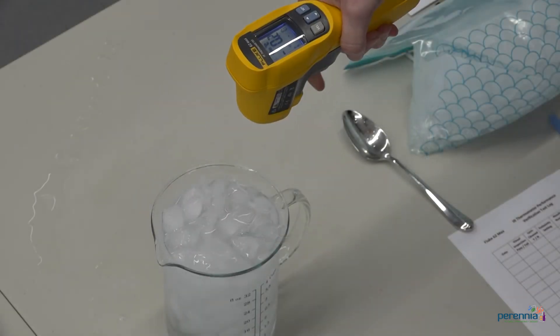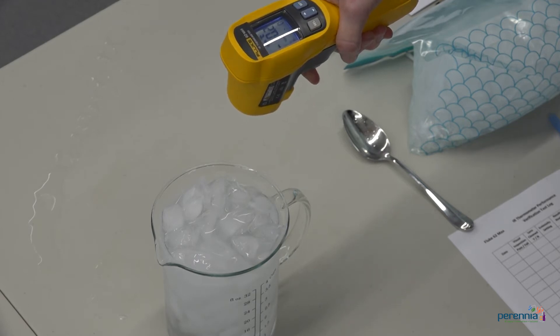Step ten, hold your infrared thermometer so that the lens opening is directly above and perpendicular to the surface of the ice bath.